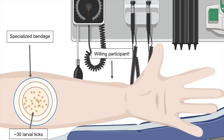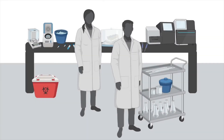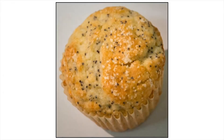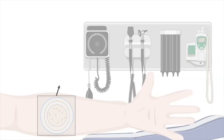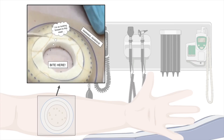Yes, that's right — people are willing to let 30 ticks feed on them while they go about their daily business. These ticks have undergone thorough laboratory testing and do not carry any diseases that are known to be transmitted to humans by ticks. We're talking about really small ticks. Can you spot the ticks on this poppy seed muffin? There are five right here — this is how small the ticks are. These particular ticks are actually nymphs, which are larger than the larvae we use on study participants. Here is an image of ticks being placed on a study participant. Larval ticks are about the size of a period at the end of a sentence.